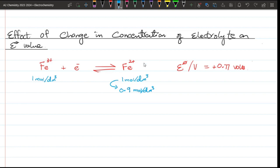Let's see. If the concentration of Fe²⁺ was 0.9 mole per dm³, the reaction will be favored in the forward direction. In the forward direction, I will say right hand side.